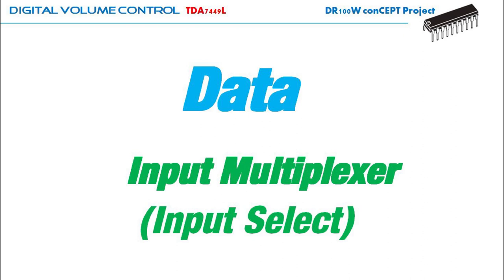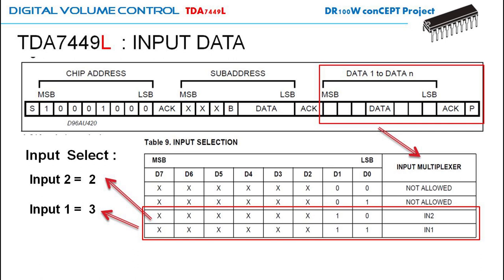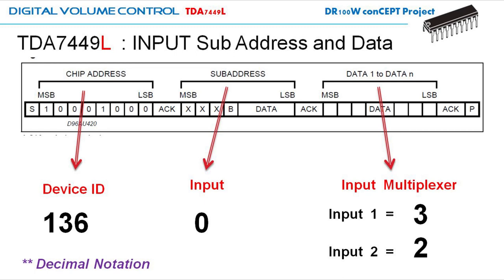It's now time to supply the needed data for the subaddresses. To select the two inputs in the input multiplexer, I need to supply data 2 to select input 2, or data 3 to select input 1. In summary, to access the input multiplexer, I need to identify the device ID — 136 in decimal — specify the subaddress function as 0, and then send data to choose either input 1 (data=3) or input 2 (data=2).